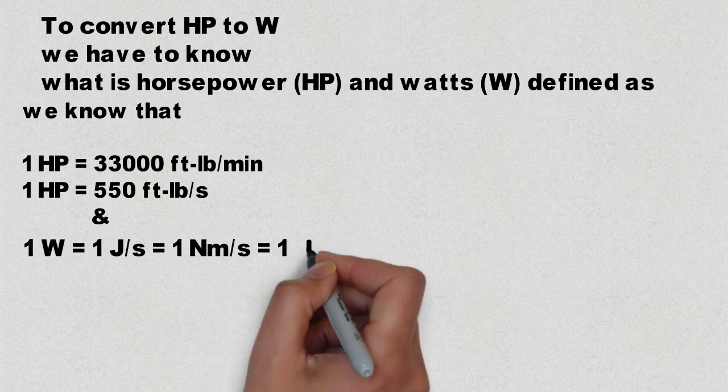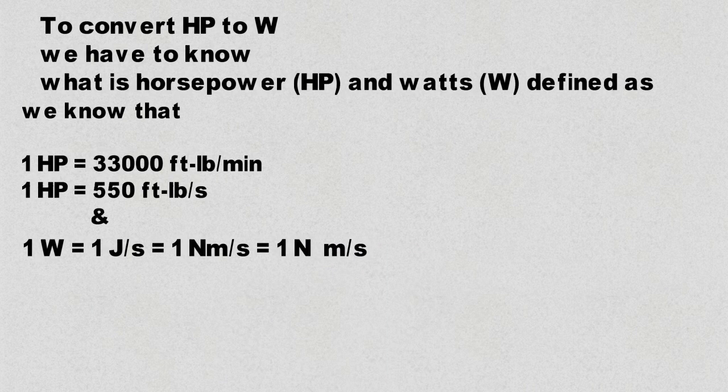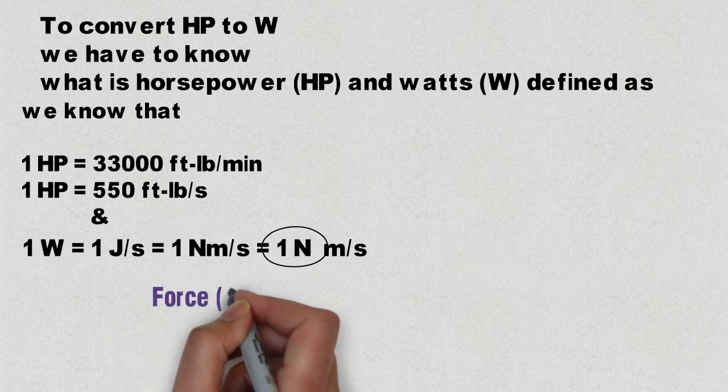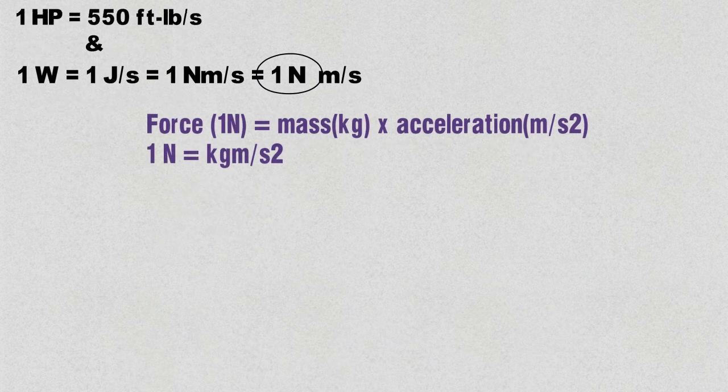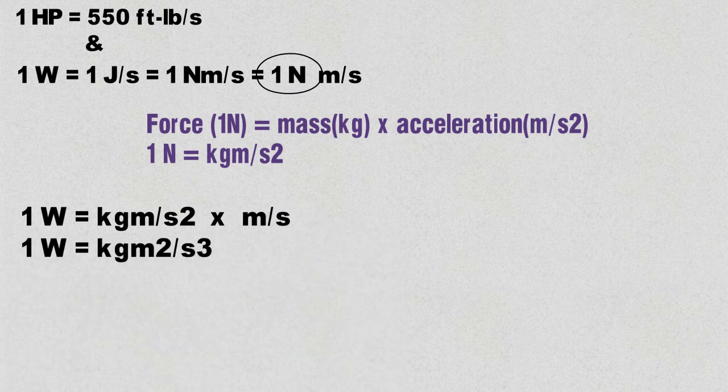That's equal to one newton-meter per second. We know that one newton force is equal to mass times acceleration due to gravity, and if we multiply their units we get kilogram meter square per second cubed.